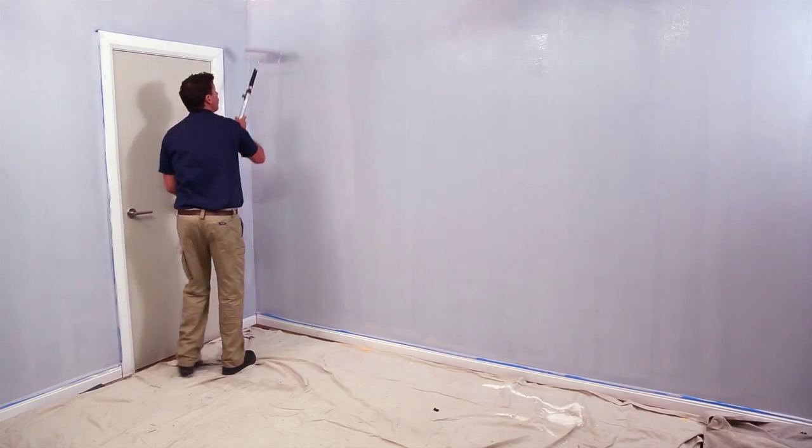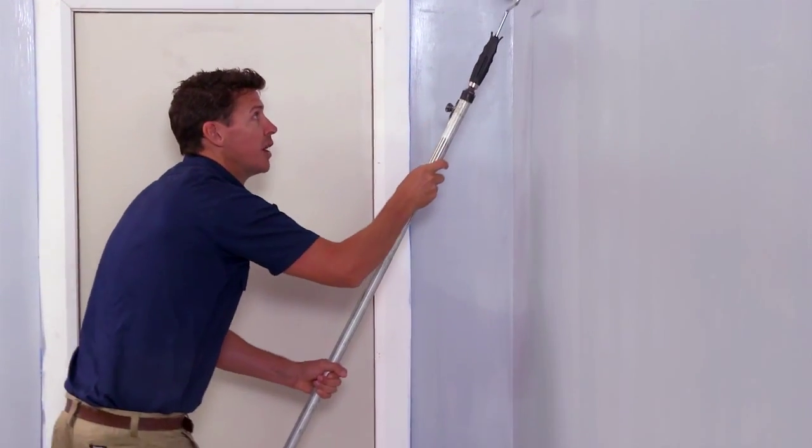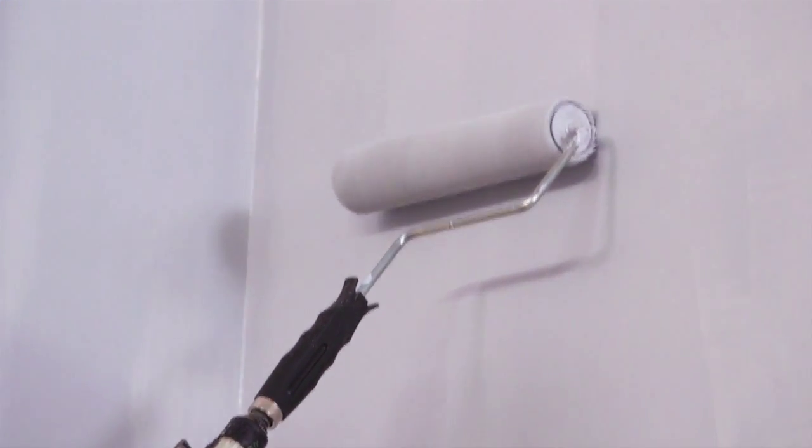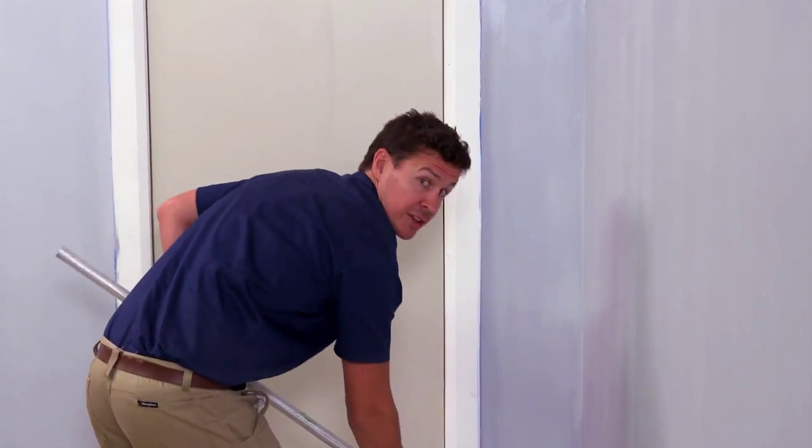Repeat this all the way down, overlapping just to remove any lines made on the right side of the roller. Repeat this process across the entire wall.